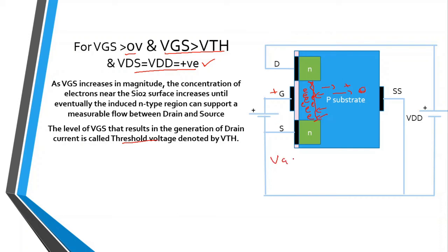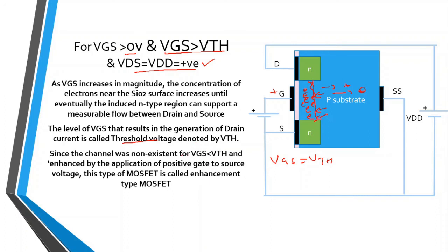The level of VGS that results in the generation of this drain current is called the threshold voltage, denoted by Vth. Since the channel was not existent for VGS less than the threshold voltage and was enhanced by the application of a positive gate-to-source voltage, this type of MOSFET is called the enhancement type MOSFET. After VGS exceeds the threshold voltage, making the gate more and more positive attracts more electrons, and as a result the drain current increases further.